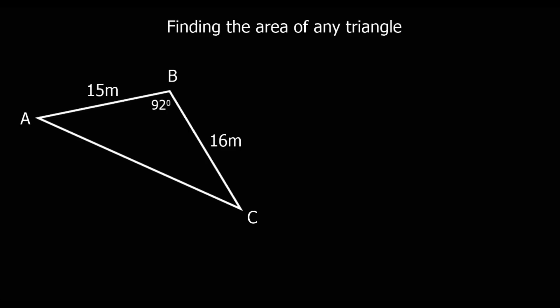We can use the formula half times base times height to find the area of a triangle when we know the perpendicular height, when we know how tall it is. In other cases, we can use a different formula. So the area of a triangle is given by half a, b, sin C.